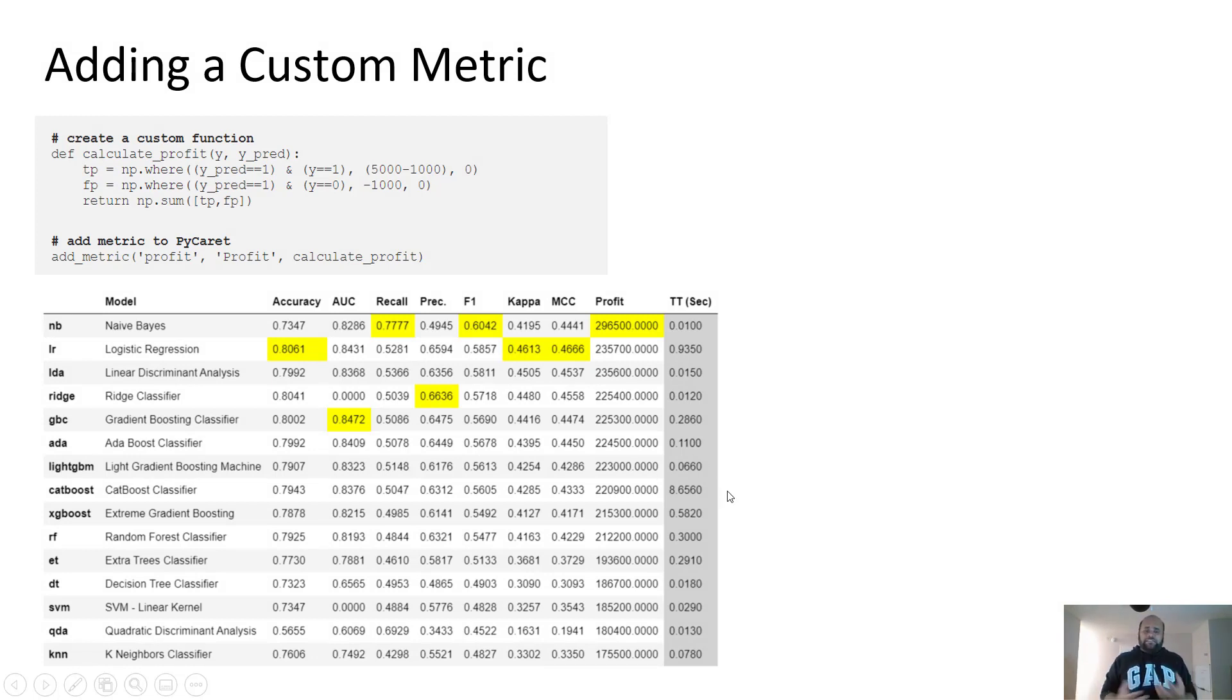But the problem here is, if you have seen, I've optimized a generic machine learning metric, AUC. Now, after the fact, I calculated the dollar amount, but I actually didn't feed that intelligence to the model. What you can do in PyCaret is actually write these two lines of code and pass that intelligence to the add metric function.